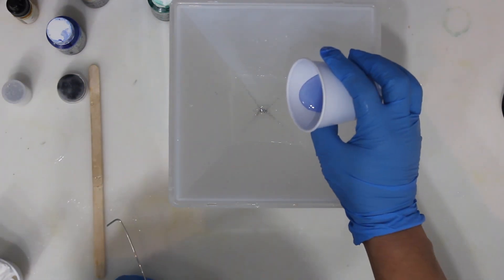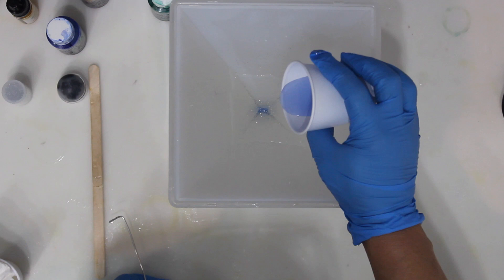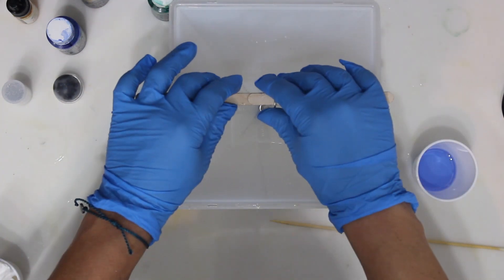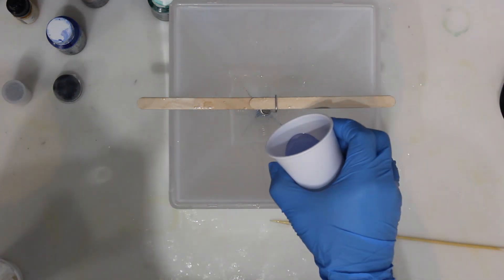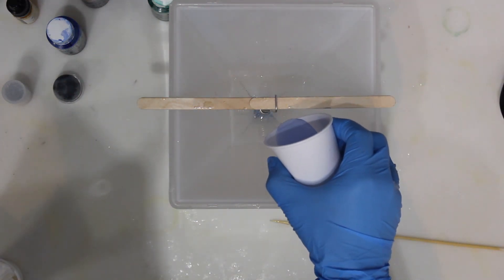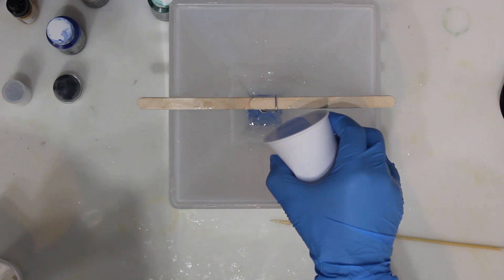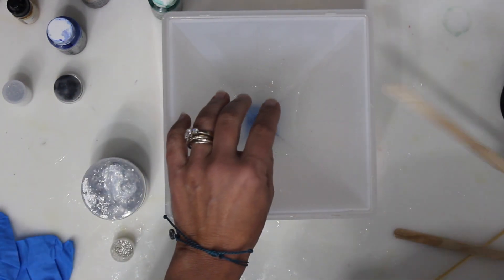Next I will pour light blue resin and suspend the crystal. Now as the resin cures it will compress the suspended crystal and wire, creating a toroidal or doughnut shaped field of electromagnetic energy around the orgonite.